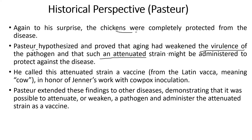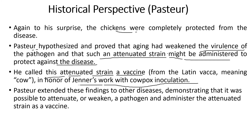He called this attenuated strain a vaccine, in honor of Jenner's work with cowpox and inoculation. Jenner was the one who had injected the cowpox virus to protect against smallpox. Pasteur used that attenuated strain as a vaccine which could be injected into people infected with certain diseases to prevent them. Pasteur extended his findings to other diseases, demonstrating that it was possible to attenuate or weaken a pathogen and administer the attenuated strain as a vaccine.